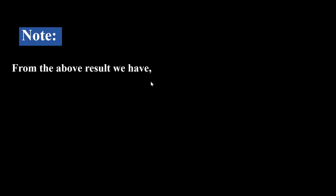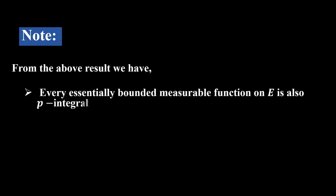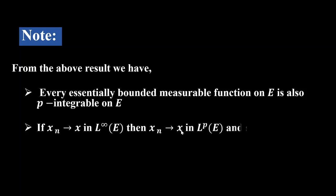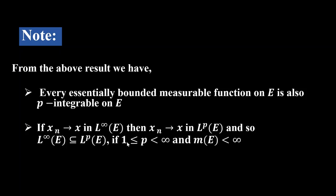From this result we can note that every essentially bounded measurable function on E is also p-integrable. Also, if x_n converges to x in L∞(E), then x_n converges to x in Lp(E). So L∞(E) ⊆ Lp(E) whenever 1 ≤ p < ∞ and M(E) < ∞. From the above results we have these two inclusion results. Thank you.